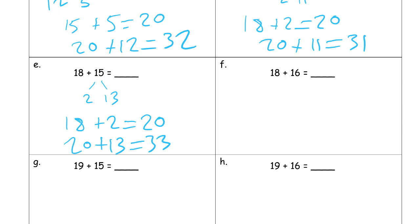And I can do the same thing here with the 16. The 16 is going to be one more than 18 plus 15. So still it's going to be 2. And now it's going to be 14. 18 plus 2 equals 20. 20 plus 14 equals 34.